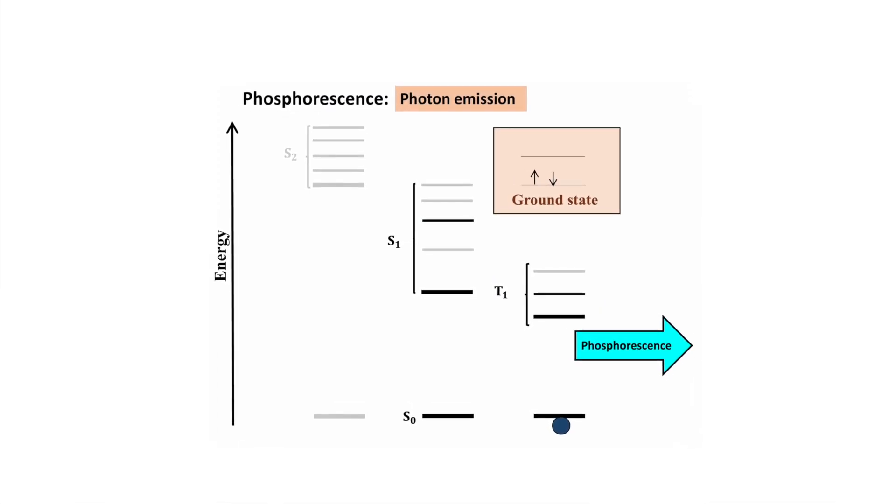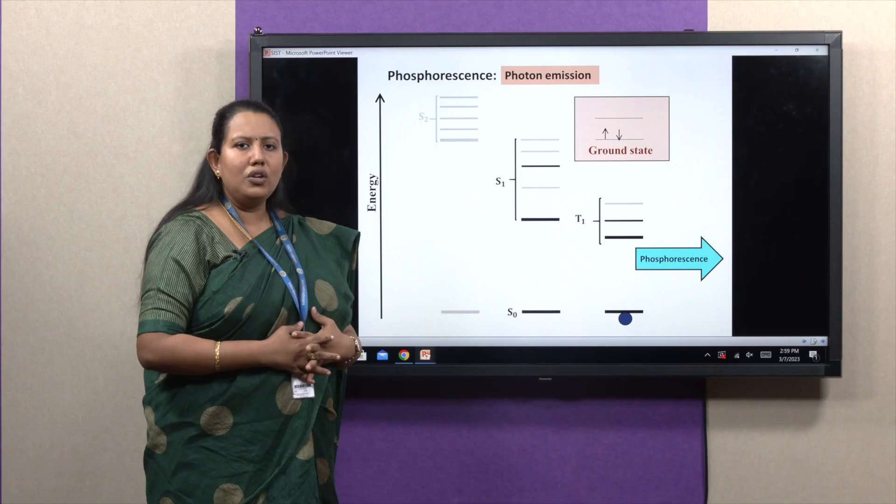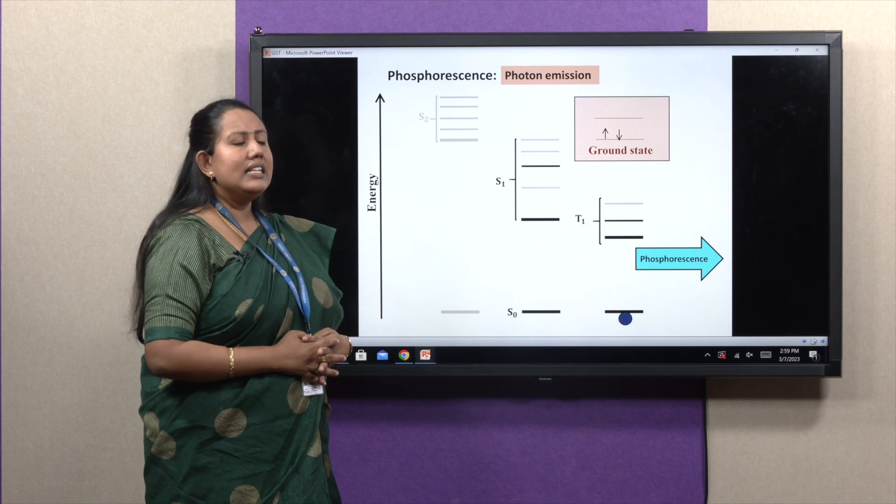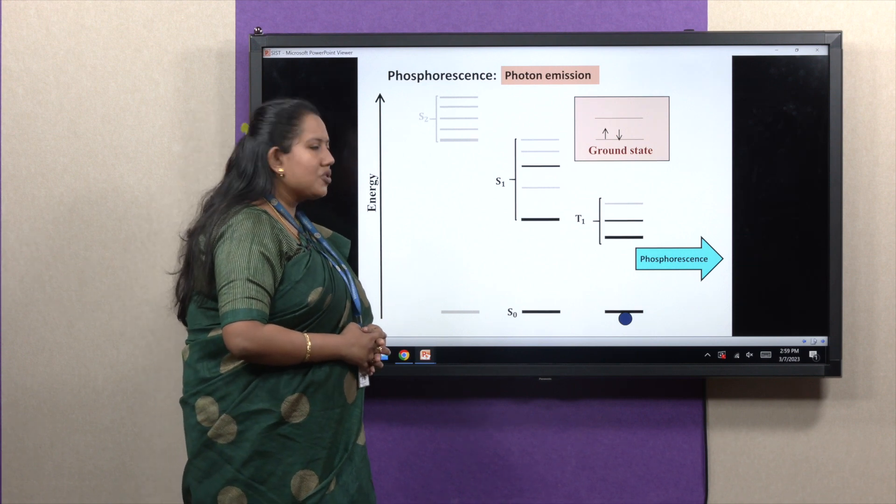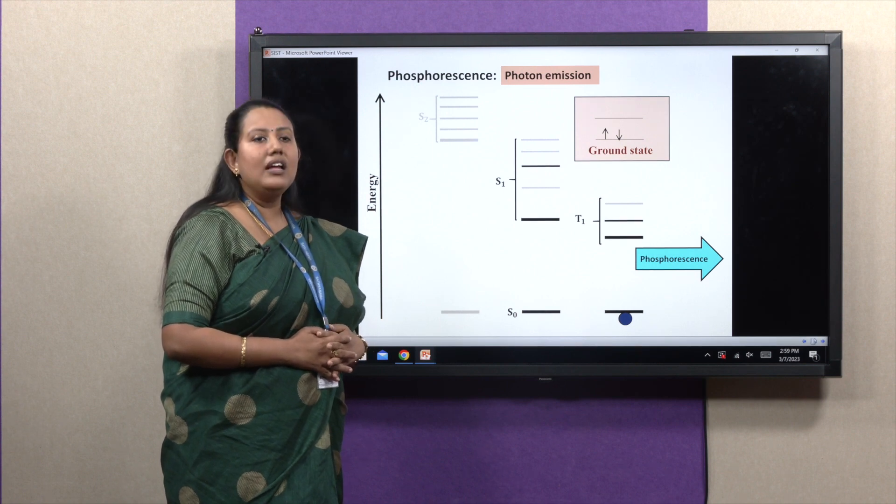Now, these fluorescence and phosphorescence altogether, this process is called photoluminescence spectroscopy.